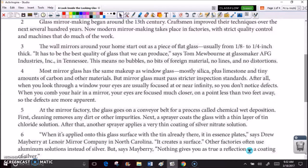The wall mirrors around your home start out as a piece of flat glass, usually from one eighth to one quarter of an inch thick. It has to be the best quality of glass that we can produce, says Tom Mooseborn at Glassmaker AFG Industries Incorporated in Tennessee. This means no bubbles, no bits of foreign material, no lines, and no distortions.